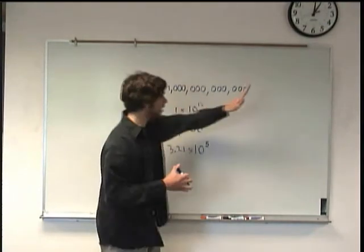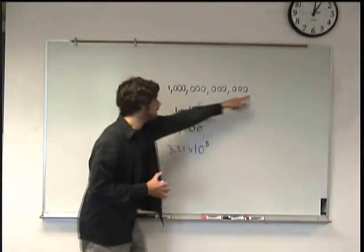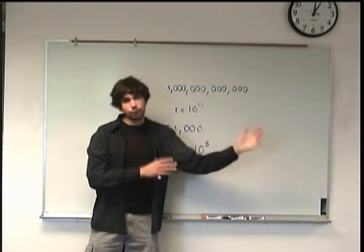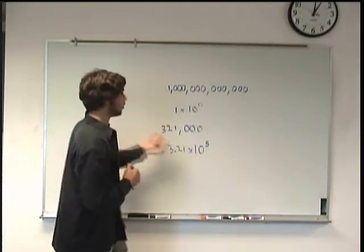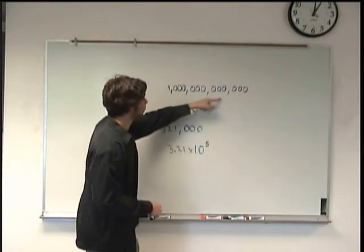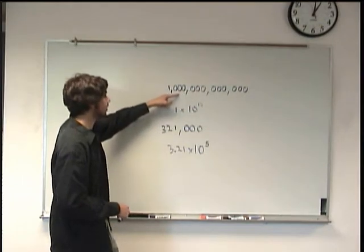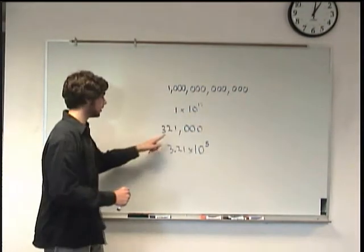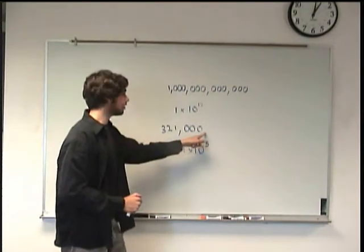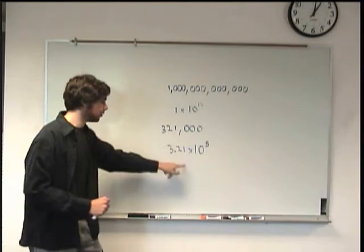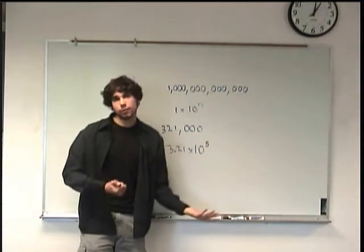Another way you can think of it is to just find the end of the first zero and count the number of places all the way this direction until you get just before the first non-zero number. So we can start here and just count all the places: one, two, three, four, five, six, seven, eight, nine, ten, eleven, twelve. There's our one times ten to the twelfth. Same concept here. We start here: one, two, three, four, five. 3.21 times ten to the five. Either way it will work just as well. It just depends on whatever you're more comfortable with.